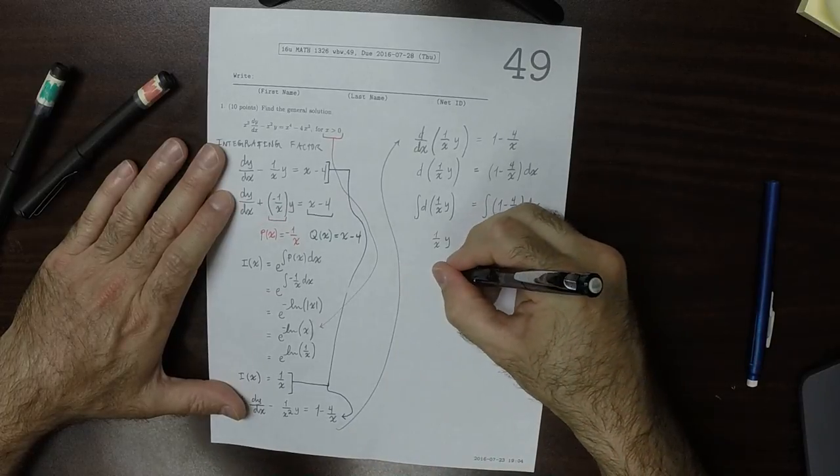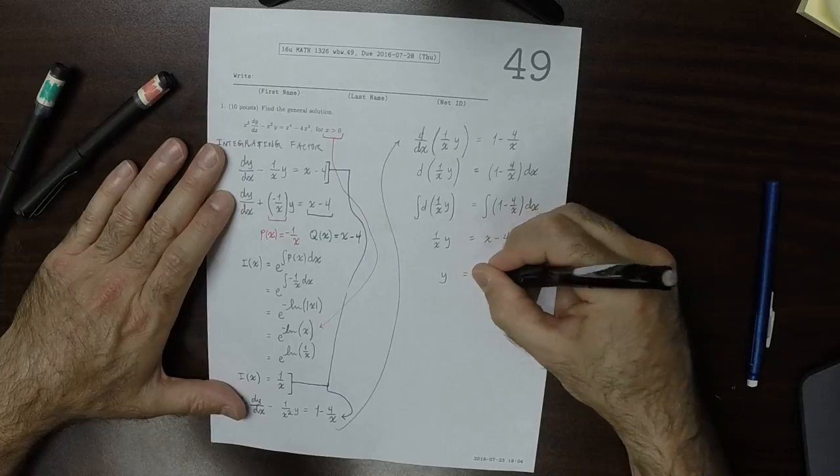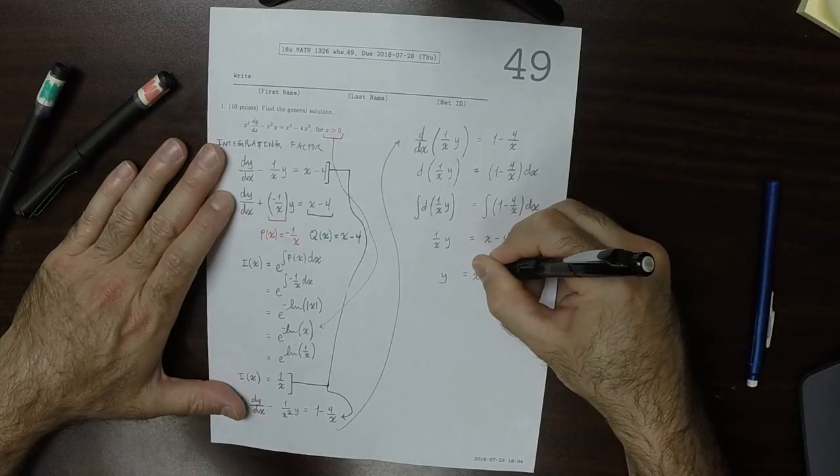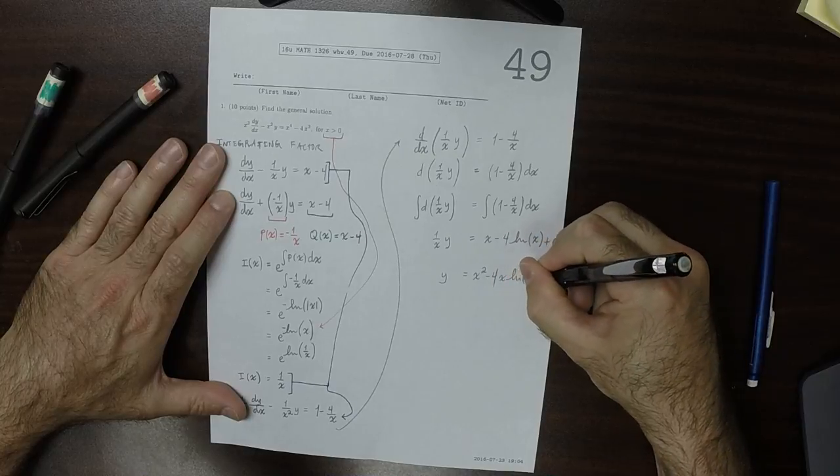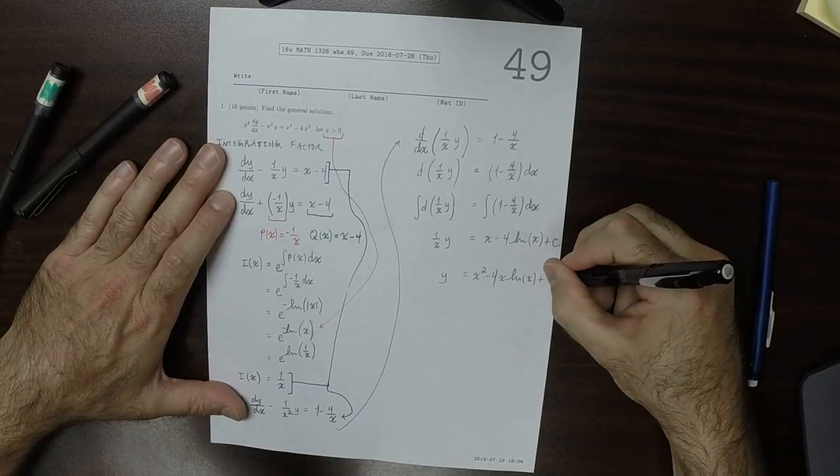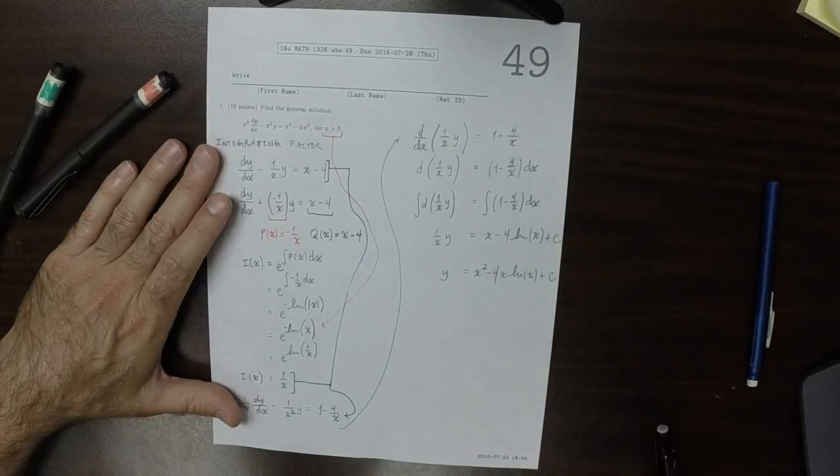And so now we can solve for y. To get y is x squared minus 4 x log x plus a constant. And that's the general solution.